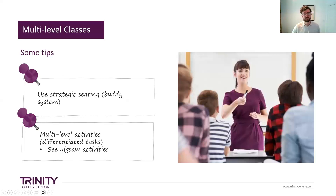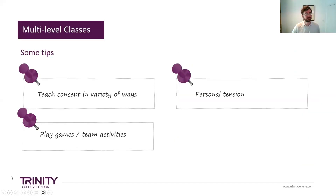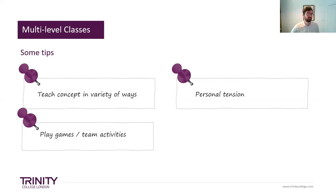There are strategies we can use with multi-level classes, like having a buddy system — stronger students help students of a lower level. At other times stronger students can sit together and work on something more difficult. Lower students can also work on their areas of interest. Jigsaw activities are quite useful — I'm going to show you an online article with lots of great ideas. I think jigsaw activities are fantastic as a way of adding communication to reading, grammar, and a variety of other areas, making it more communicative with an information gap.